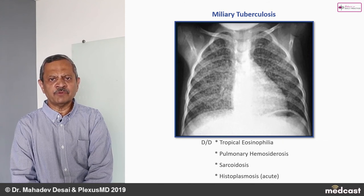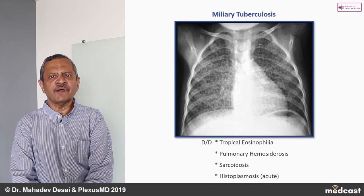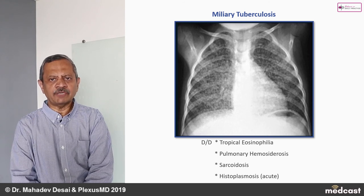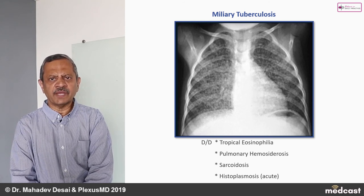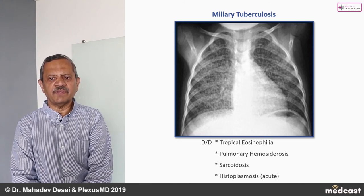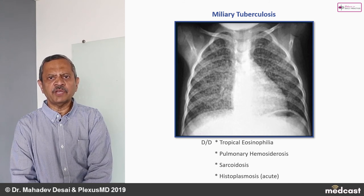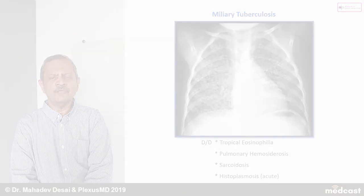Histoplasmosis is a type of fungal infection caused by Histoplasma capsulatum. It is not very common routinely but may occur in patients in the setting of HIV. In acute infections, you might get this kind of miliary mottling.